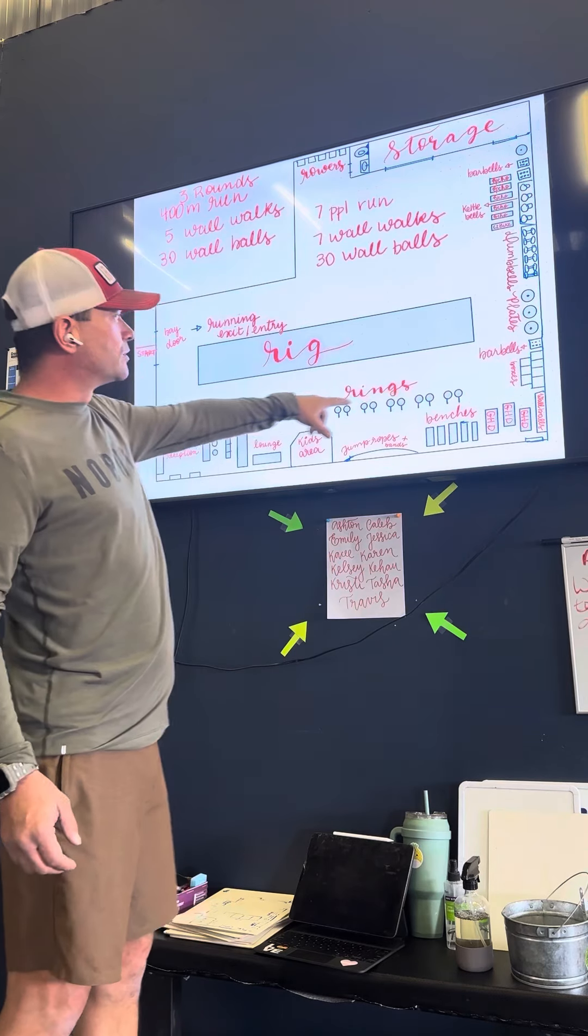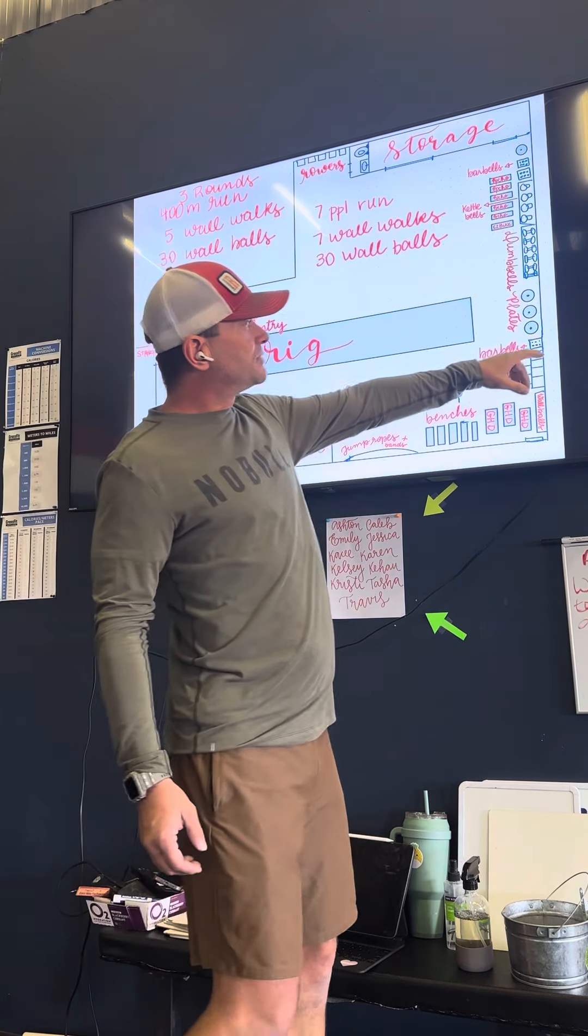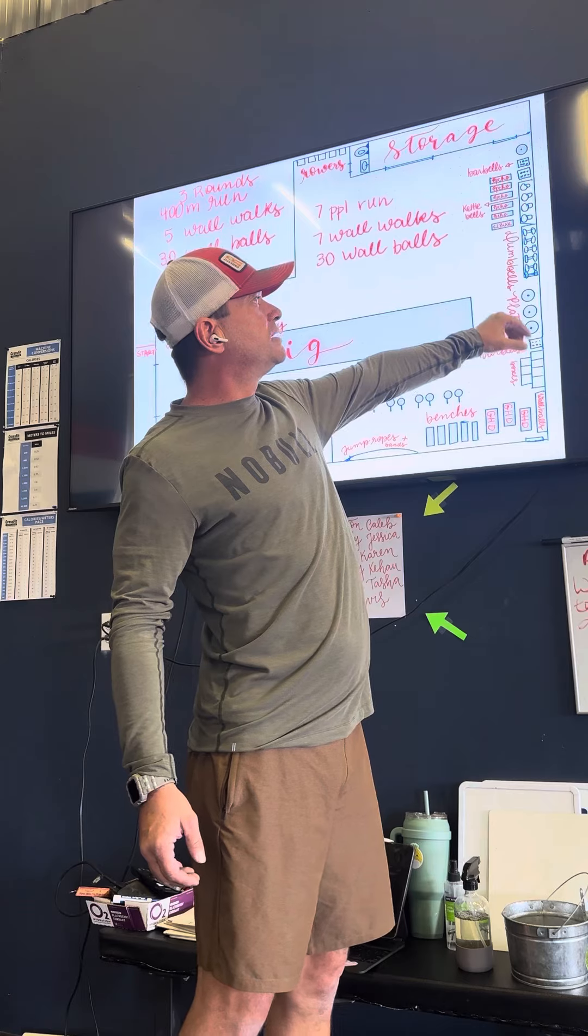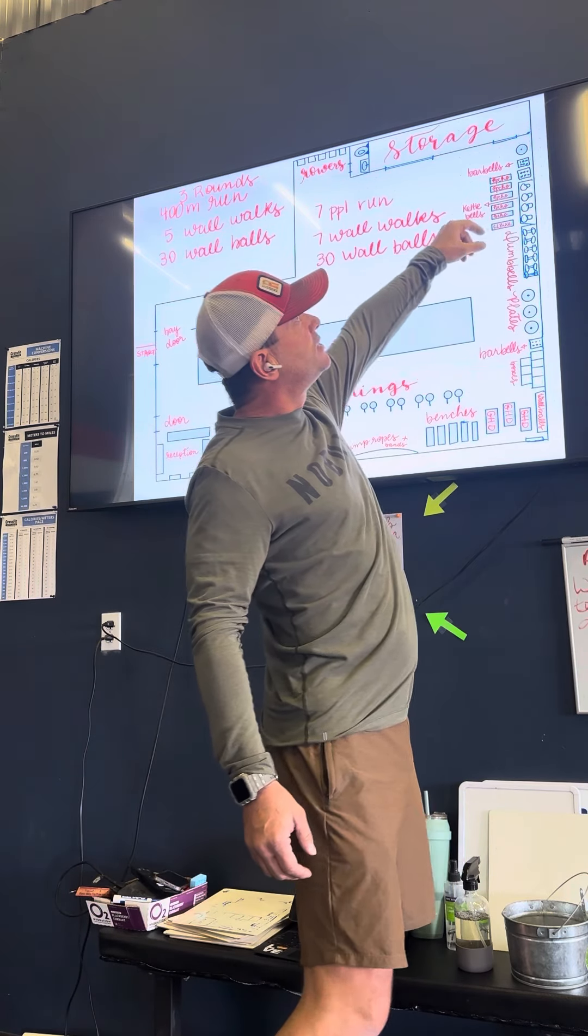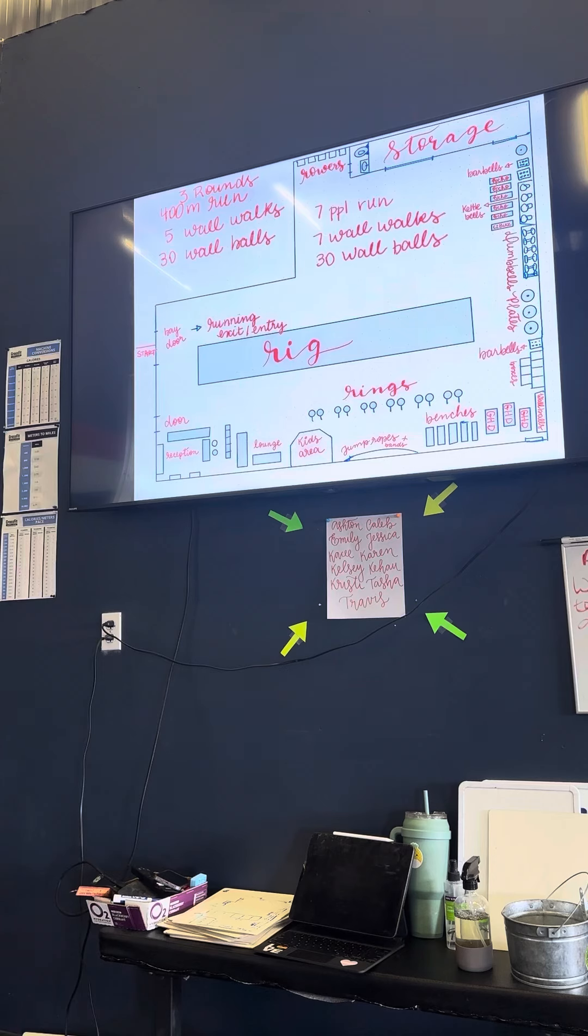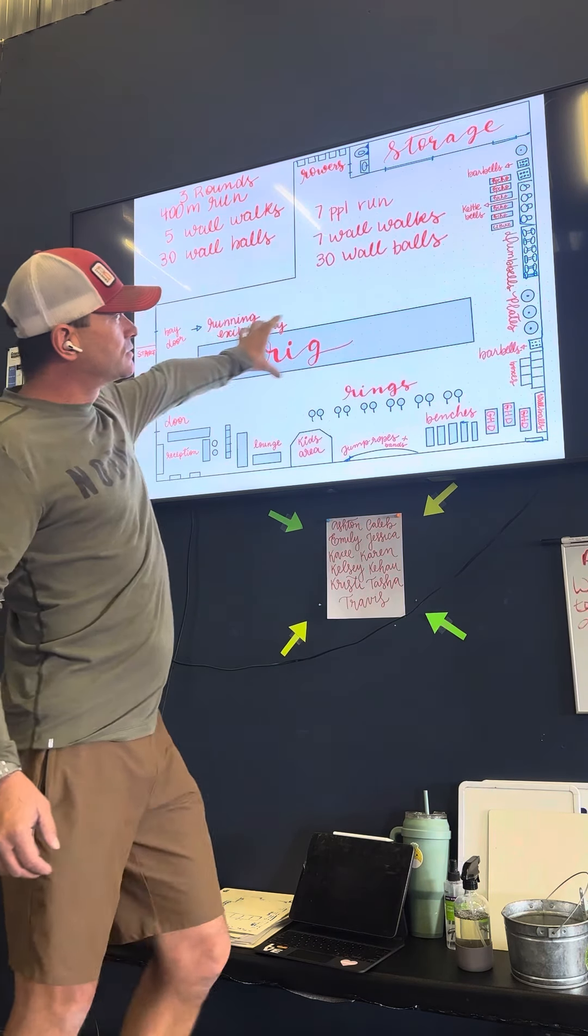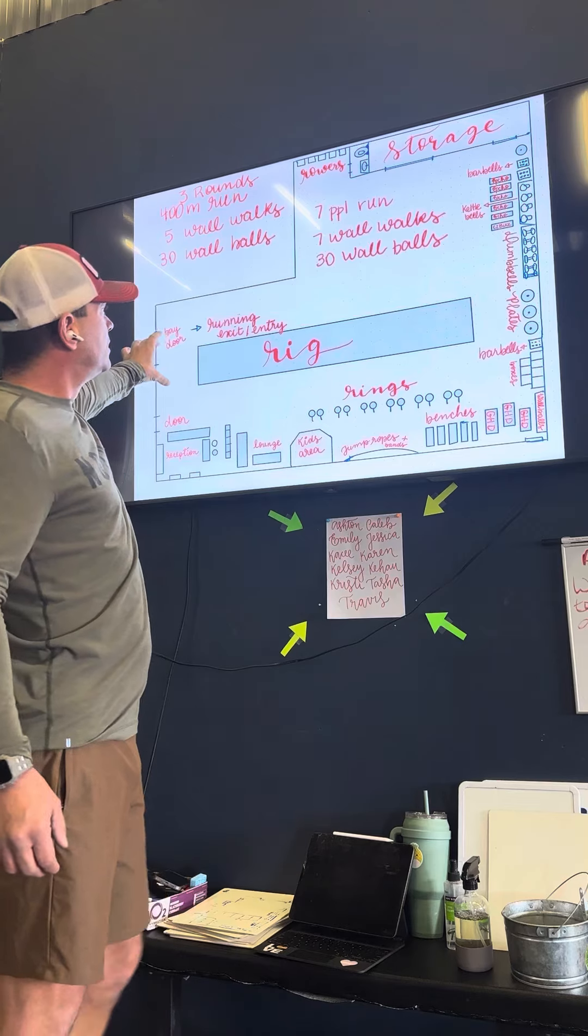We have a row of rings here. Coming around the corner we have upright barbells and upright holders. We have our dumbbells and we have another section of upright barbell holders. We have about 50 feet of rig right down the middle here.